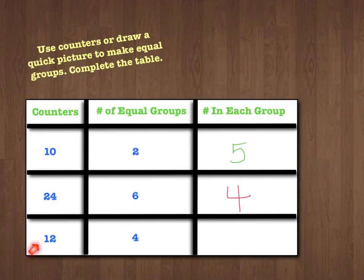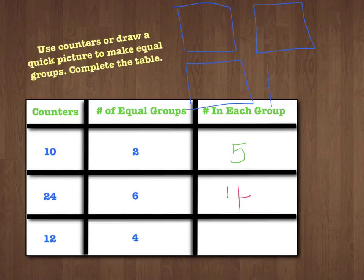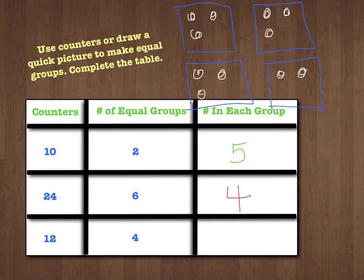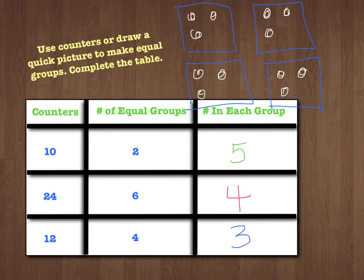Let's do our last one. We have 12 counters, and we have to divide them into 4 equal groups, so we need to find out how many will be in each group. First, we draw out our 4 equal groups: 1, 2, 3, 4. Then I count out 12 counters: 1 through 12. How many does that put in each group? Let's count: 1, 2, 3. Do I have the same in each group? 1, 2, 3 — yes, each group has 3. So that puts 3 counters in each group. 12 counters divided into 4 equal groups gives me 3 in each group.